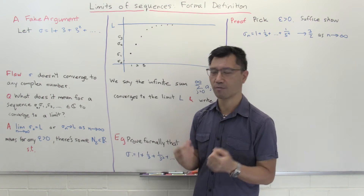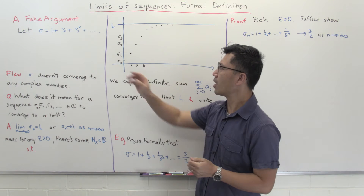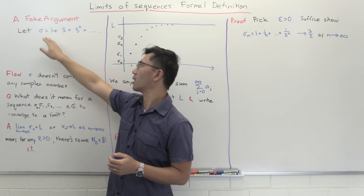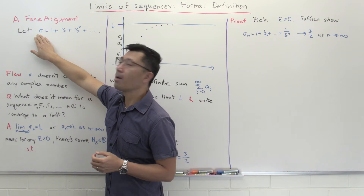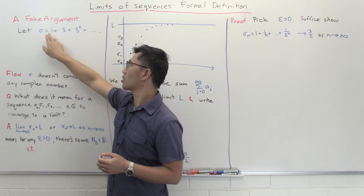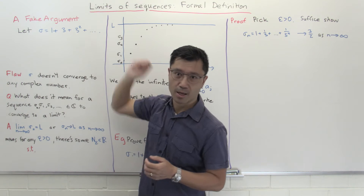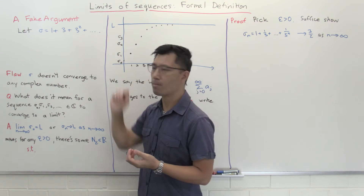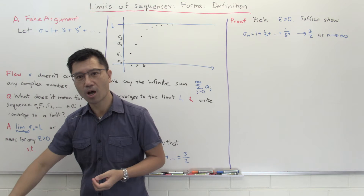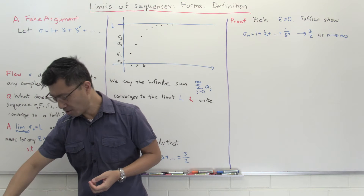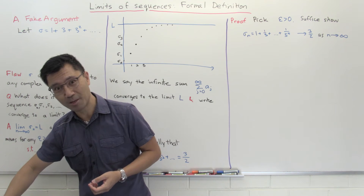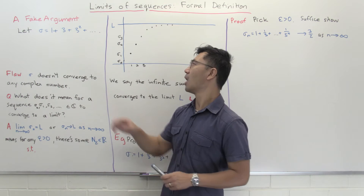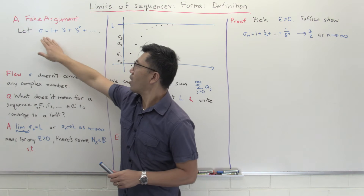We're going to look at this infinite sum written as Sigma — it's just 1 plus 3 plus 3 squared and so forth, adding up powers in a geometric series. Of course, hopefully you know that this is something you shouldn't be doing. But let's play around with it anyway.